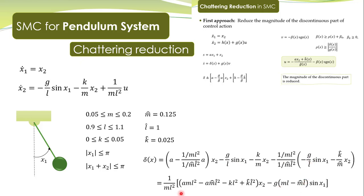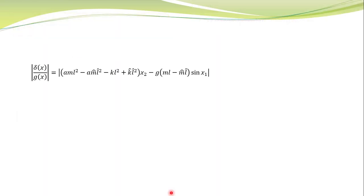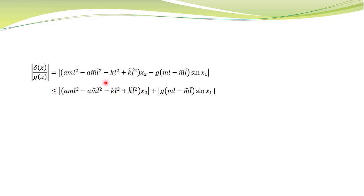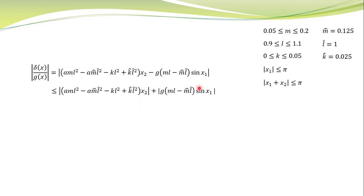Since we need an upper bound on this expression, we apply the triangular inequality. The expression is less than or equal to the absolute value of the first part plus the absolute value of the second part — note the plus sign even though a negative sign appears in the original. Here are the nominal values and bounds on the uncertain parameters.